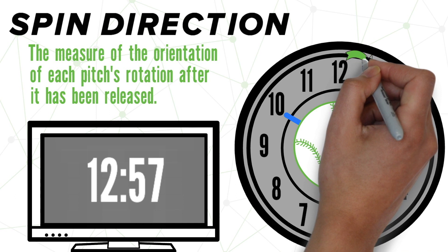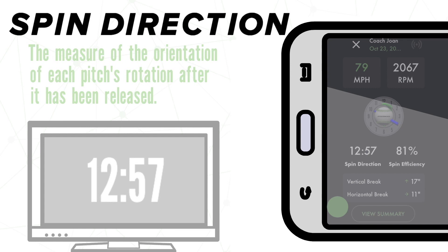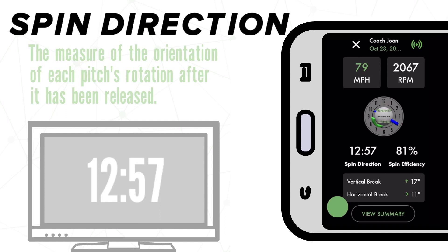So now, if we take out our phone and hop onto the Diamond Kinetics Pitch Tracker app, what does spin direction look like in action? It may look like there's a lot of stuff going on here, but for now we will focus specifically on the spin direction section. As you can see, we have both the graphical and numerical representation right here.